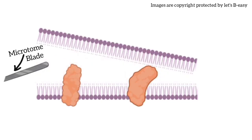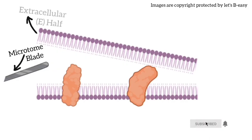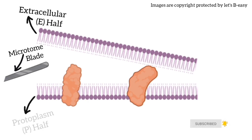Then the frozen specimen is usually fractured with a liquid nitrogen cooled microtome blade, which often splits the bilayer into a monolayer and exposes the interior of the lipid bilayer and its embedded proteins. The monolayer adjacent to the extracellular space is termed the E half, while the monolayer adjacent to the protoplasm is termed the P half.